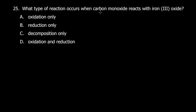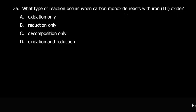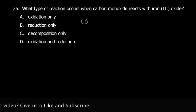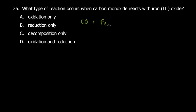Question 25: what type of reaction occurs when carbon monoxide reacts with iron(III) oxide? The equation is: CO + Fe₂O₃ → Fe + CO₂. This is a reduction reaction on the part of iron, and an oxidation reaction on the part of carbon monoxide, so overall it's called a redox reaction.